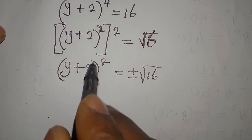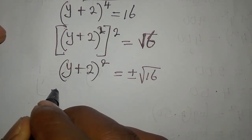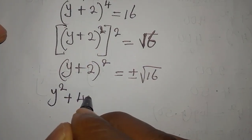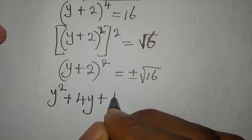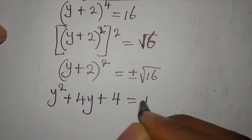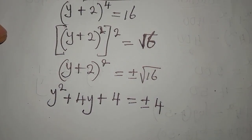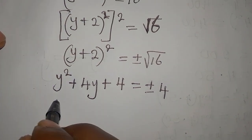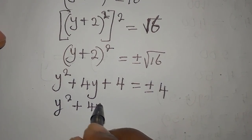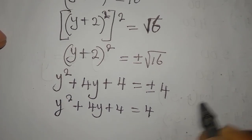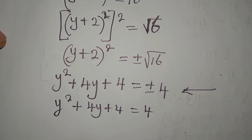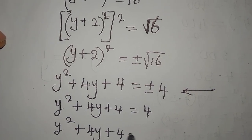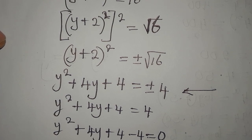So this is the point to take the square root. Then let's expand: the expansion gives us y squared plus 4y plus 4, and it is equal to plus or minus the square root of 16, which is 4. Now we're going to have two equations — one with positive 4 and one with negative 4. So for the first equation: y squared plus 4y plus 4 equals 4. Bringing the 4 to the left, we have y squared plus 4y plus 4 minus 4 equal to 0.